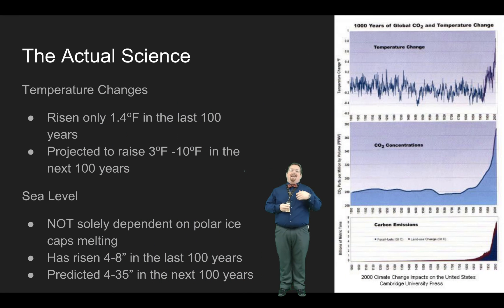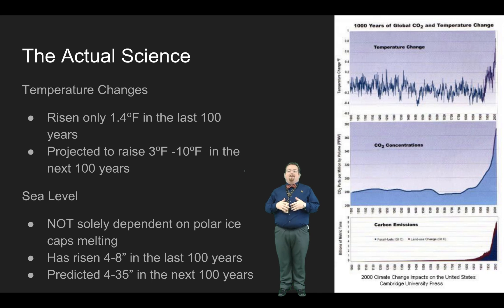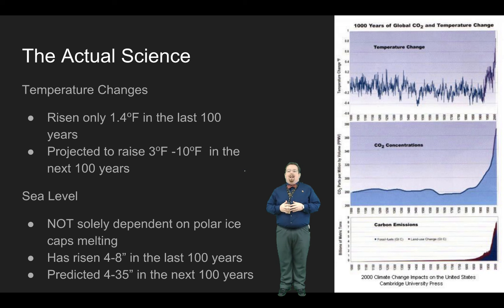If you want to look at the actual data, in the last 100 years temperatures have risen 1.4 degrees Fahrenheit, which doesn't sound like a lot, but in the grand scheme of things, it really is. Some places are a whole lot higher, some haven't changed — that's just the global average. It's projected to raise another 3 to 10 degrees in the next 100 years if we keep going the way we're going. The sea level has risen somewhere between 4 and 8 inches in the last 100 years, and it's predicted to rise another 4 to 35 inches — most likely around 19 inches — in the next 100 years. When ocean waters warm up, they expand, which also adds to the rise in sea level.